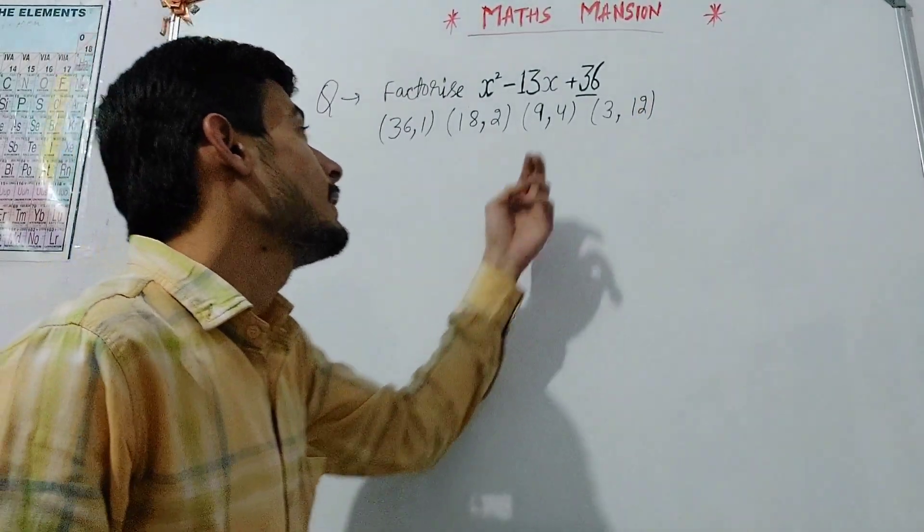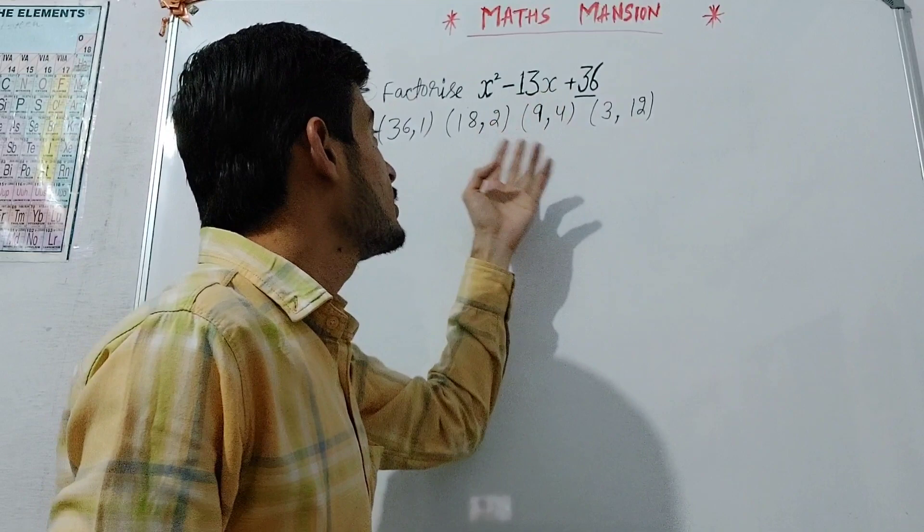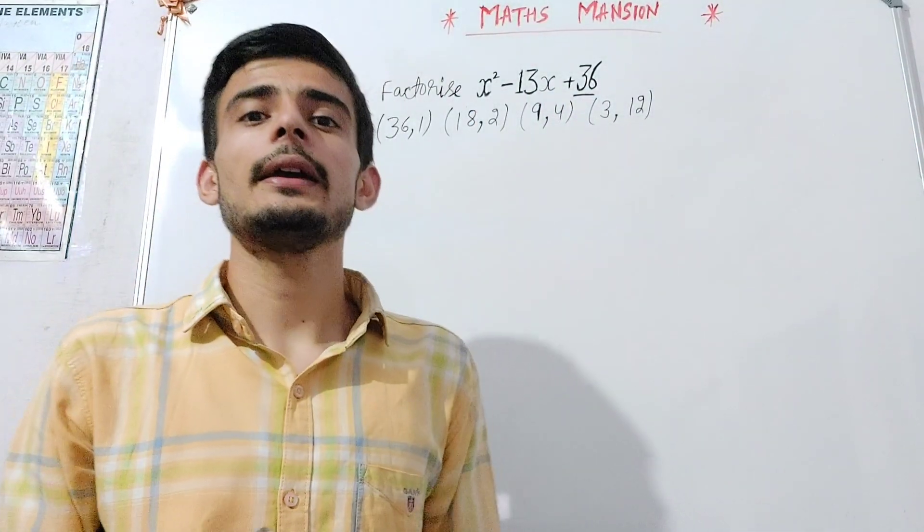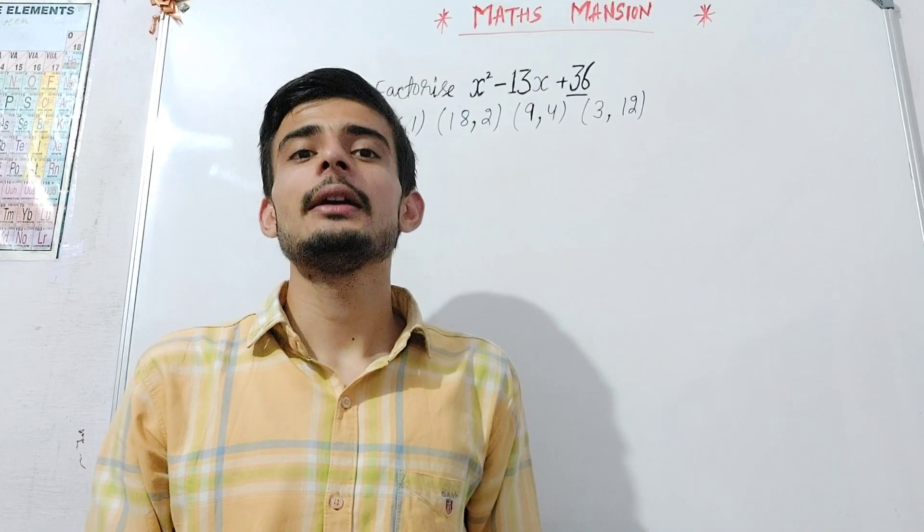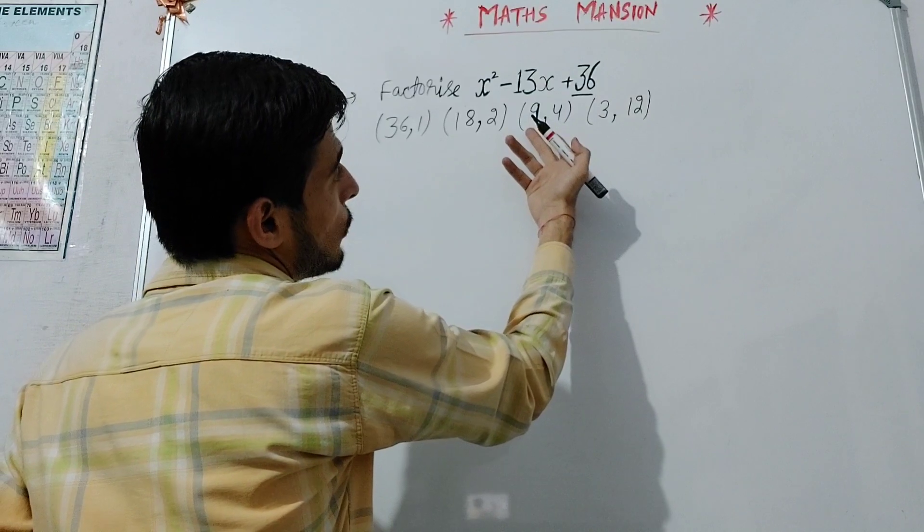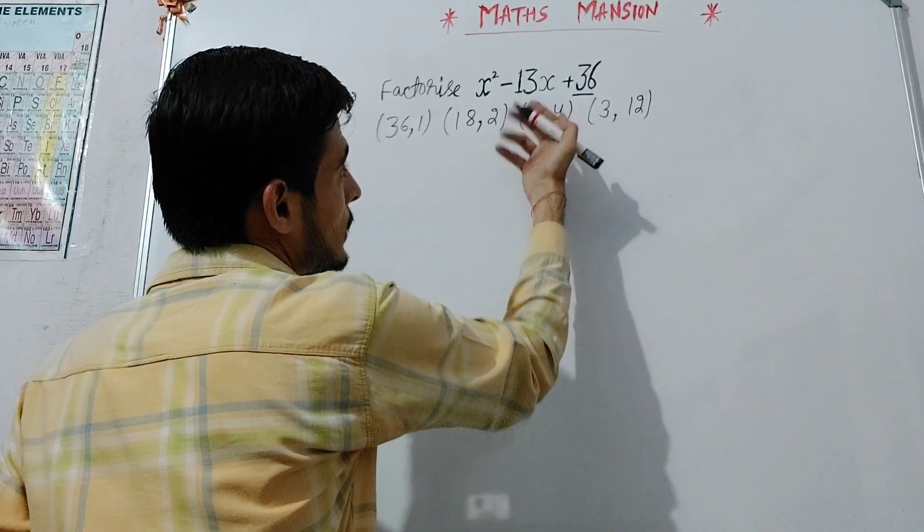Now, we have to check from which bracket we are getting sum 13. So out of all these, from 9 and 4, we get sum equal to 13.